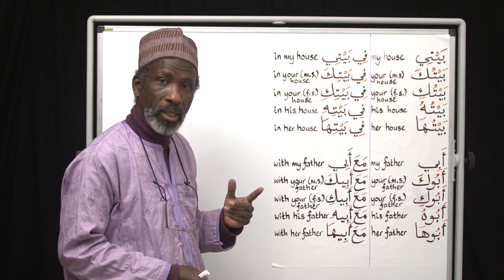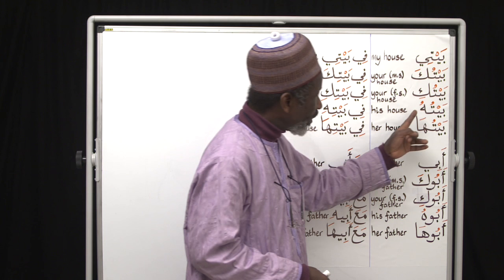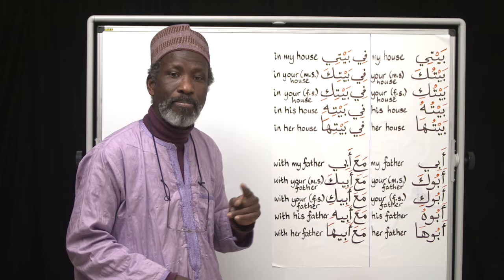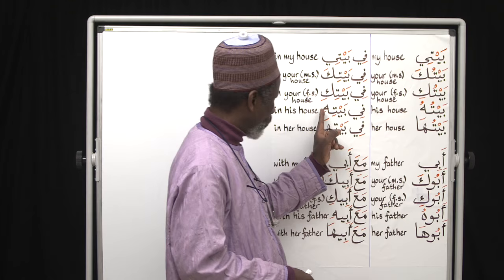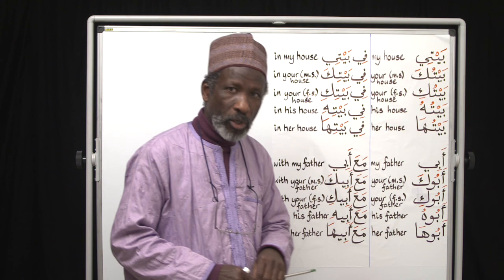Anytime you have a kasra 'ii' for any reason before the attached pronoun which means 'his', you are not allowed to combine the 'ii' with 'hu'. You cannot say fi baitii hu. You have to change that 'hu' into kasra, so fi baiti hi — meaning 'in his house'.